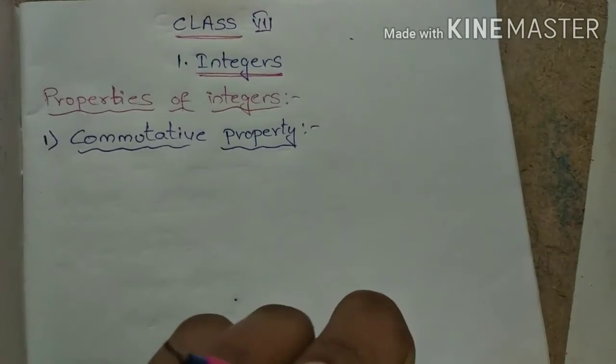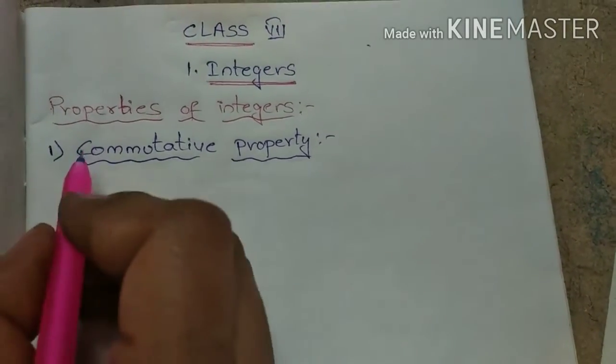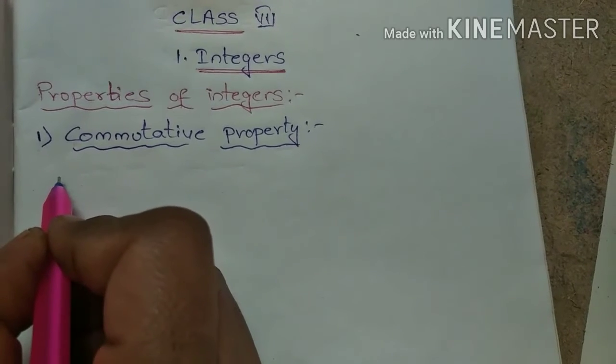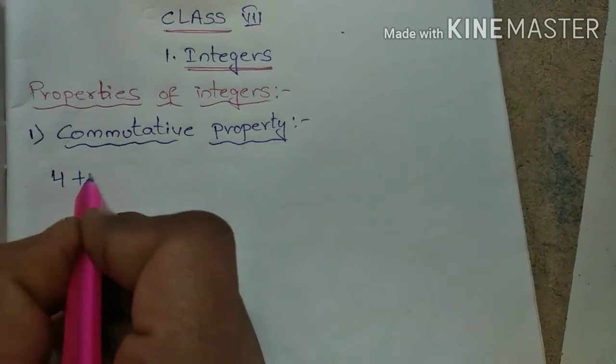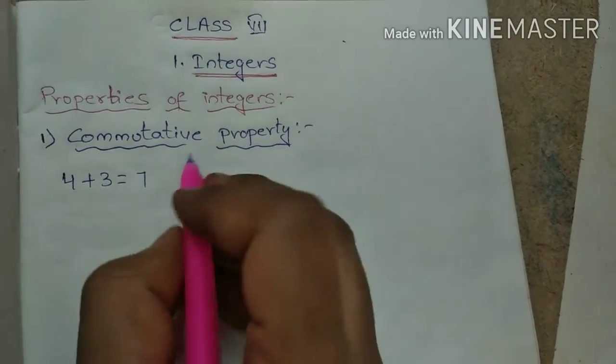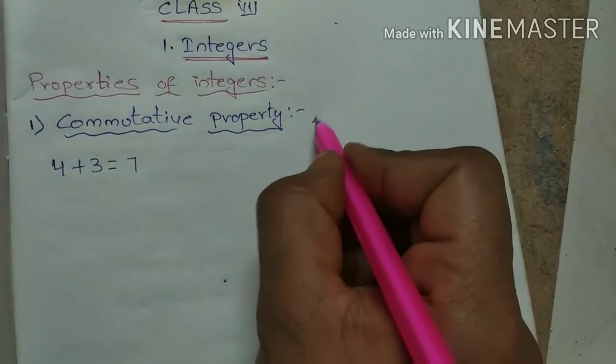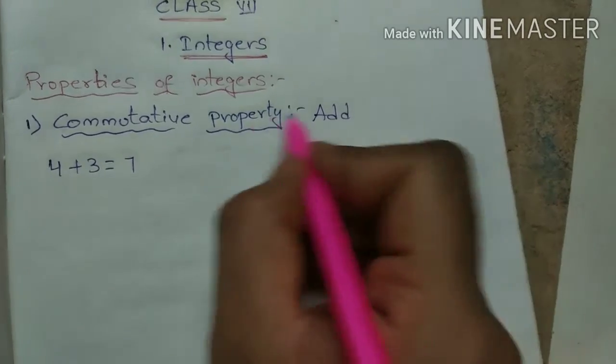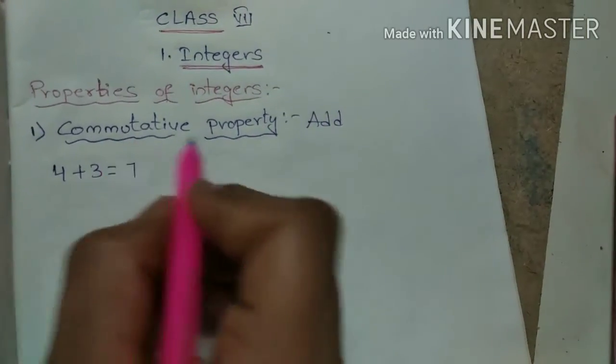First, I'll take whole numbers examples. Here, 4 + 3 equals how much? I'm taking two whole numbers and adding them: 7. So under addition, this is commutative property under addition.